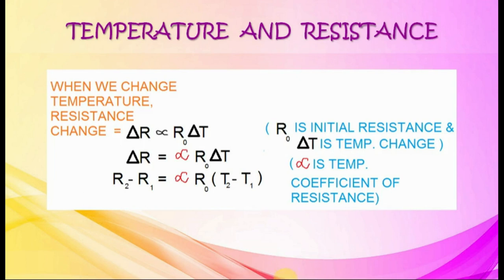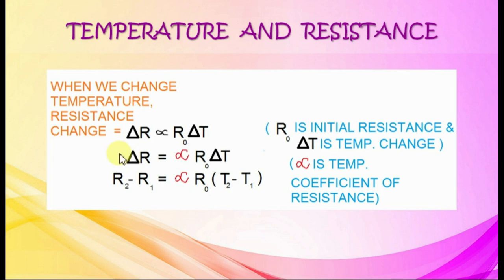Temperature and resistance: when temperature changes, resistance also changes. This change delta R is proportional to the initial resistance R0 and temperature change delta T. Adding a proportionality constant alpha, called the temperature coefficient of resistance, we get delta R equals alpha times R0 times delta T. Delta R is written as R2 minus R1 and delta T as T2 minus T1.